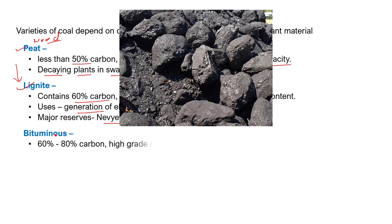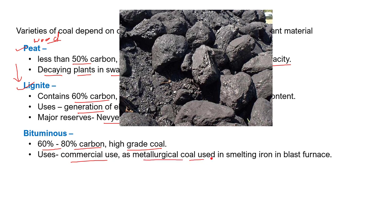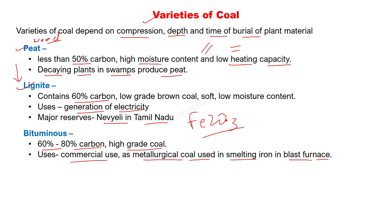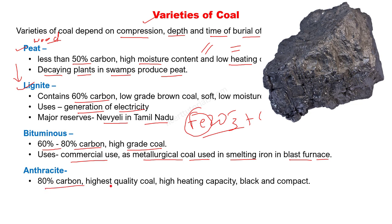Bituminous coal is of better quality than lignite, containing 60 to 80% carbon. It is a high-grade coal used commercially. In the previous part, we discussed how iron is extracted in blast furnaces using carbon — Fe₂O₃ reacts with carbon, producing CO₂ and iron. Anthracite is the highest quality coal with 80%+ carbon, high heating capacity, and is compact coal found in Jammu and Kashmir.